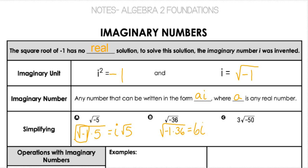Let's look at one more. We already have a 3 out in front. Then I'm going to split this root apart into negative 1 times 25 times 2. When I simplify that, the square root of 25 is 5, times 3 is 15. The square root of negative 1 is i, and I still have a square root of 2. So that's how I would write 15i√2 when I simplify it all.